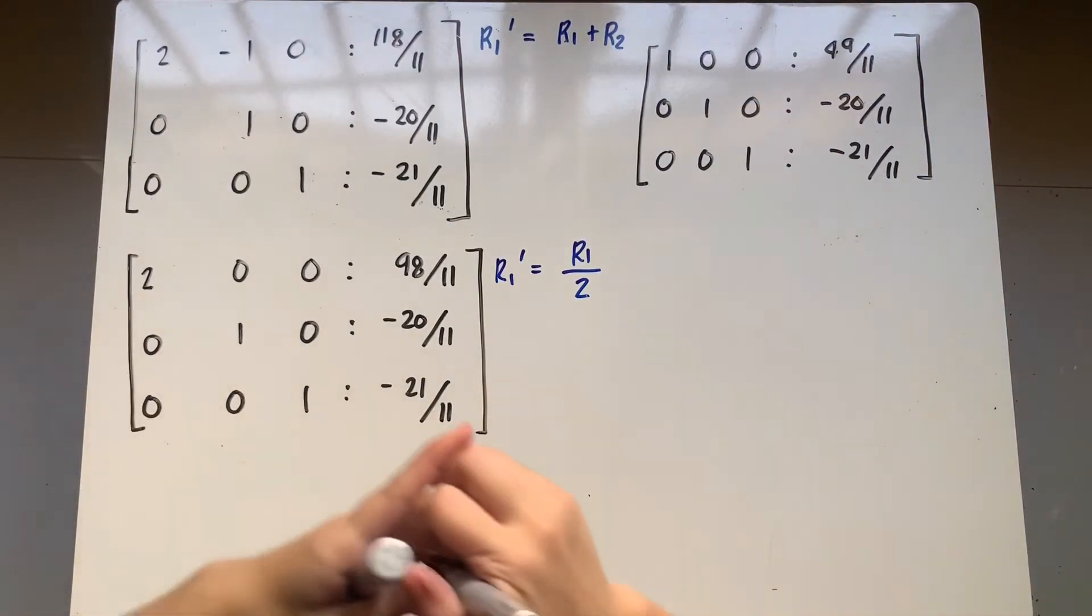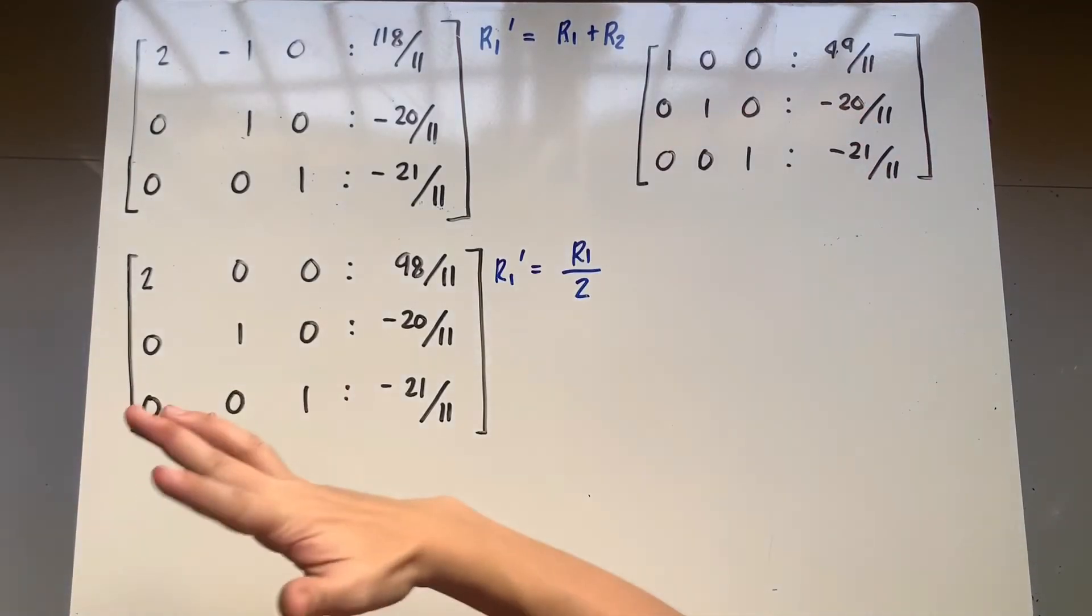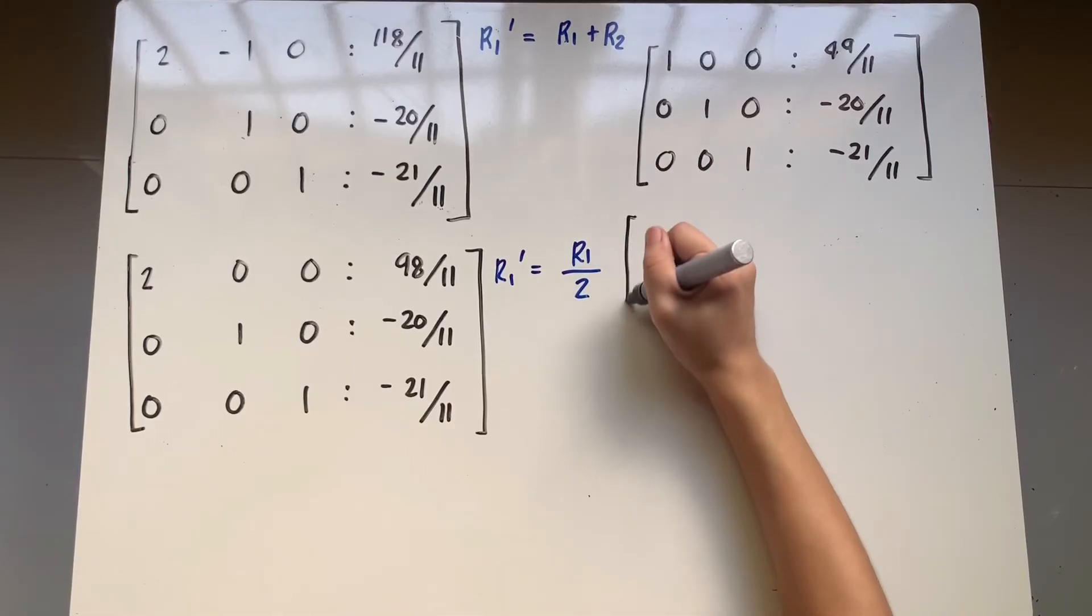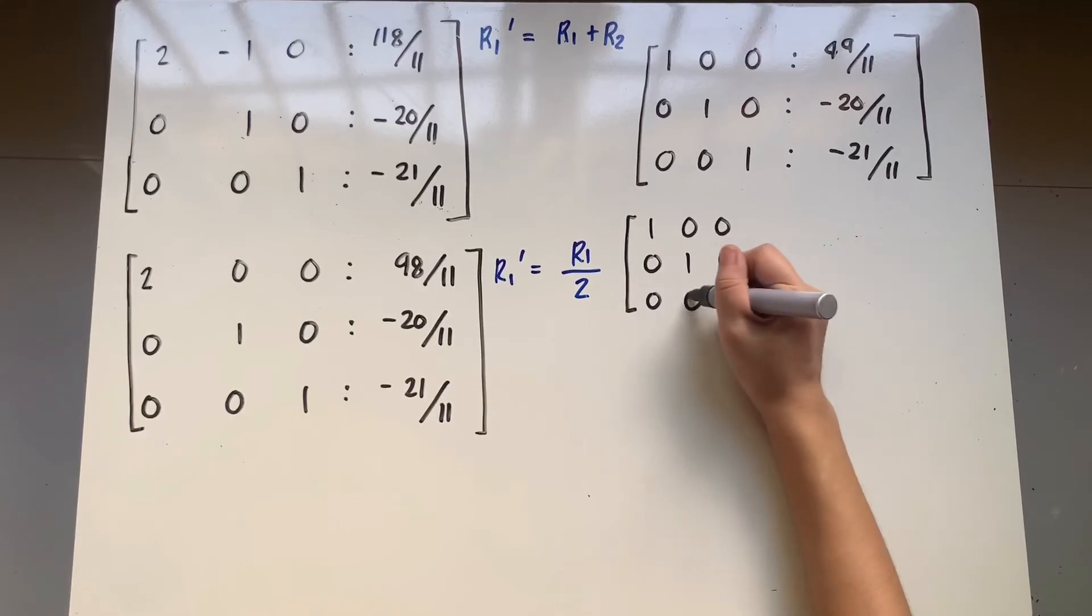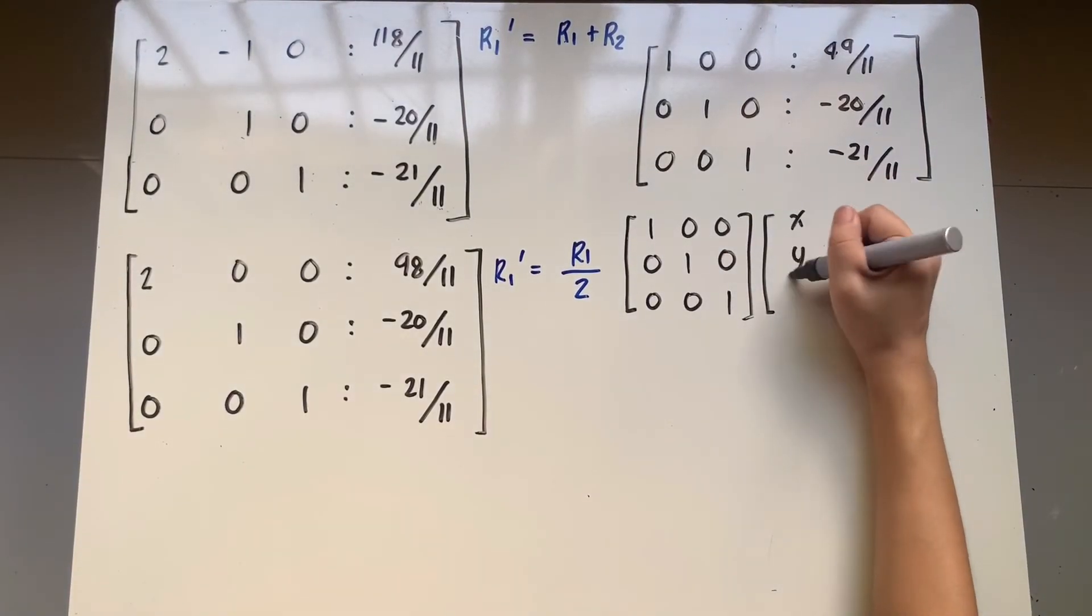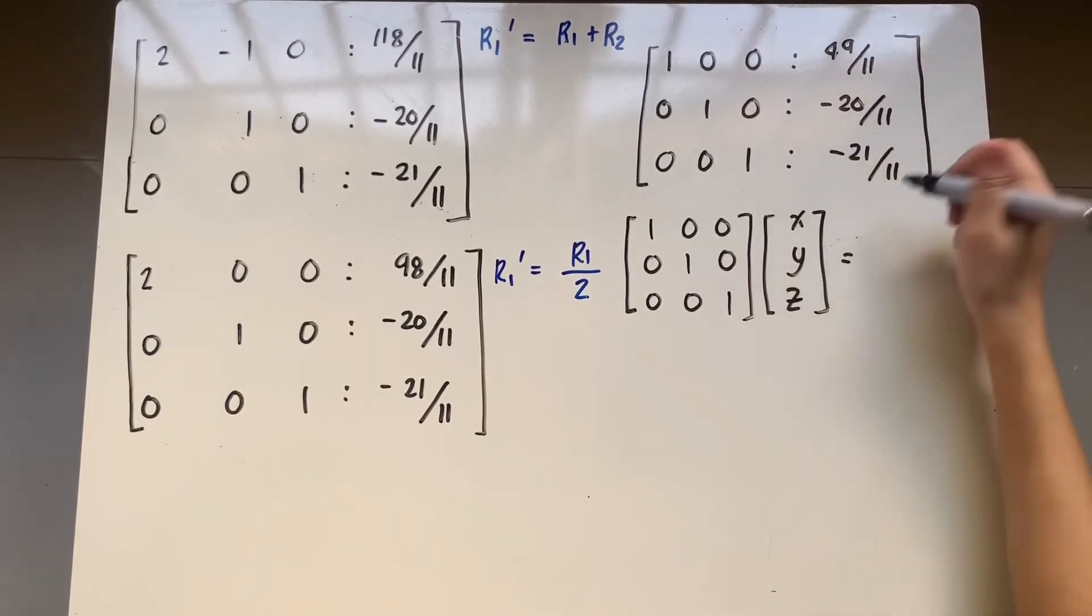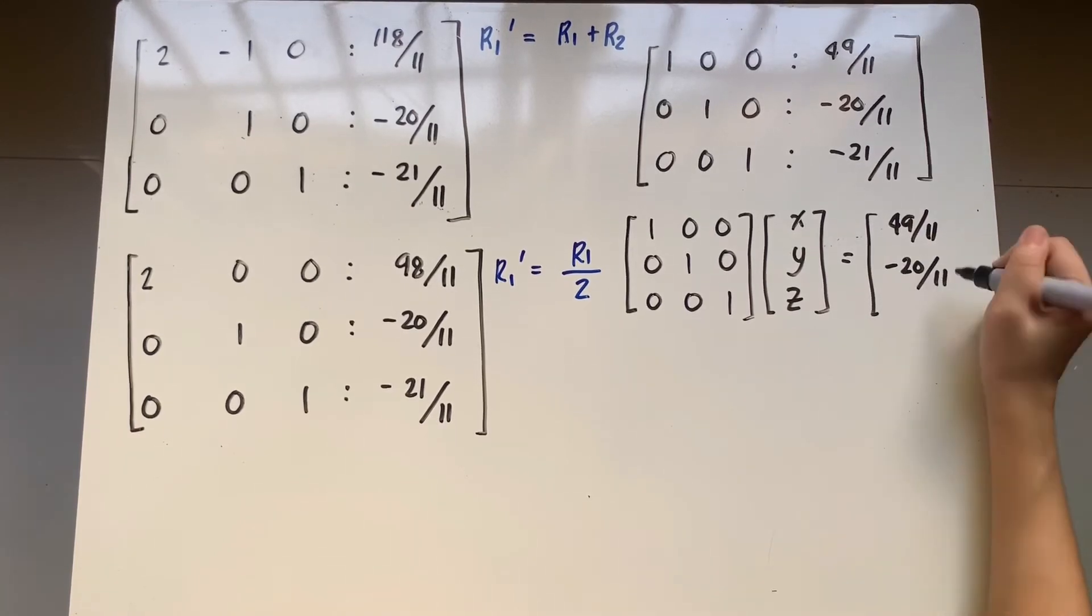But, to show you why, you're going to transform the augmented matrix back pa punta sa matrix form niya. And the matrix form of this is that you have an identity, 1, 0, 0, 0, 1, 0, 0, 1, the coefficient, multiplied to its set of variables, x, y, z, to be equivalent to the matrix of constants that you have. And that is 49 over 11, negative 20 over 11, and negative 21 over 11. After that, we're going to do multiplication.